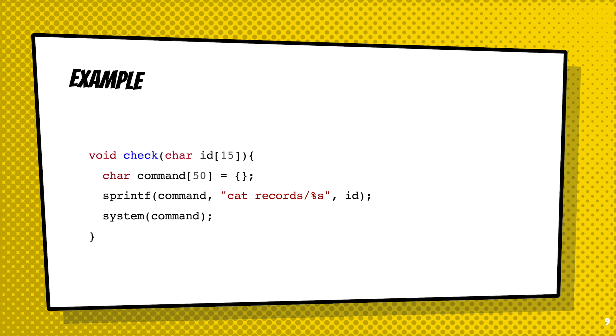In check, the program will read the record according to the ID provided to this function, and then it uses function system to execute the command of cat followed by the file's path in order to read the file and check if the file exists.